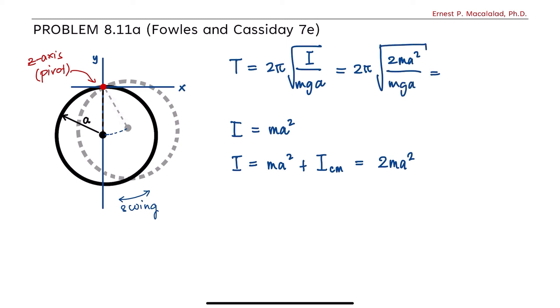Or, simplifying this, this is equal to 2π times the square root of 2a over g.